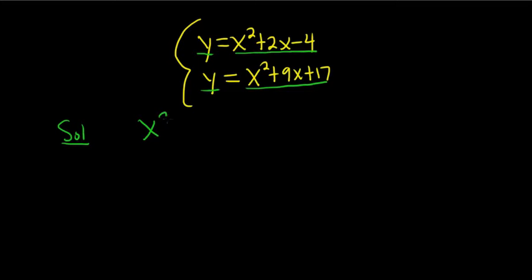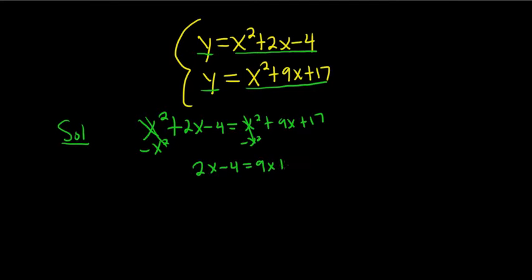So x squared plus 2x minus 4 is equal to x squared plus 9x plus 17. Then we can subtract x squared from both sides, so we end up with 2x minus 4 equals 9x plus 17.